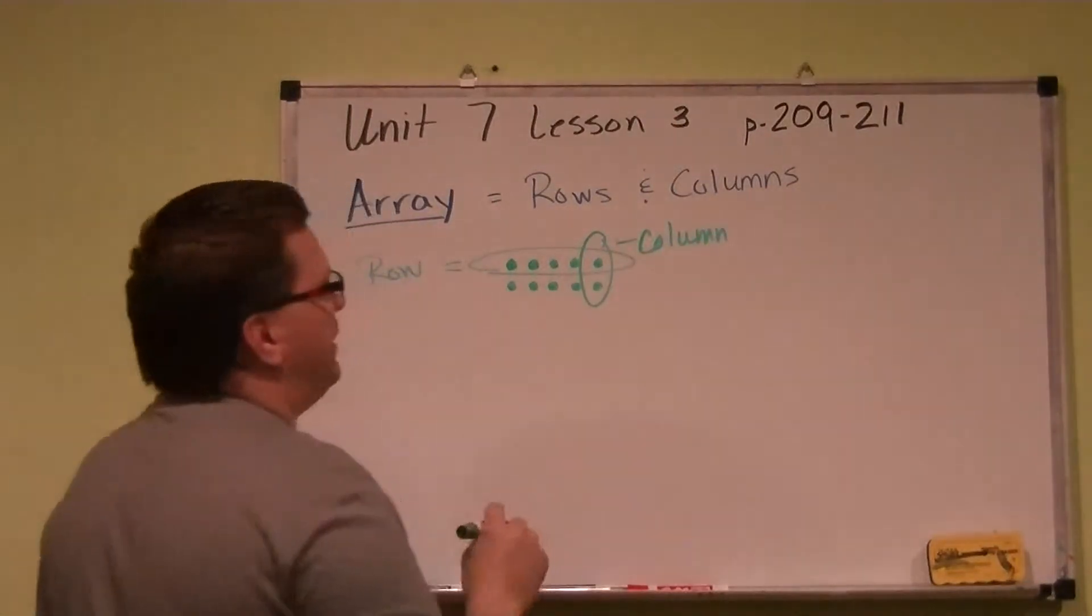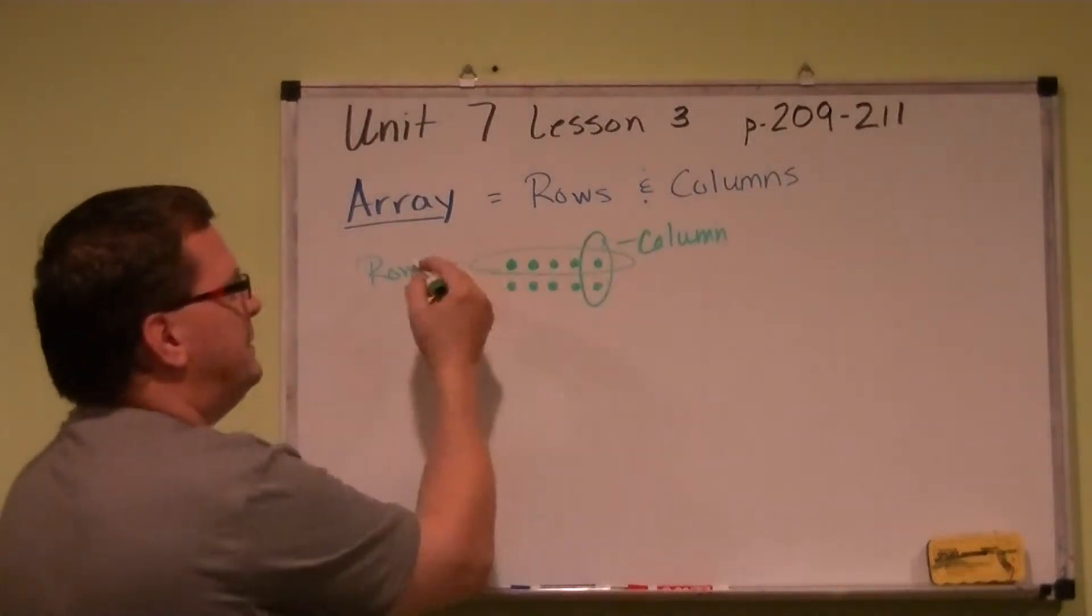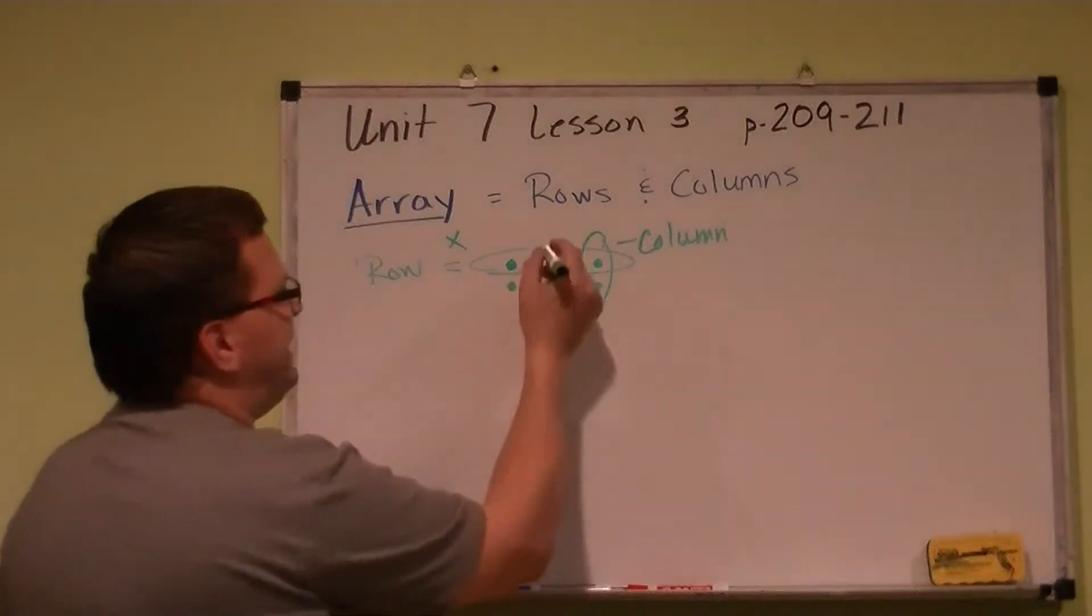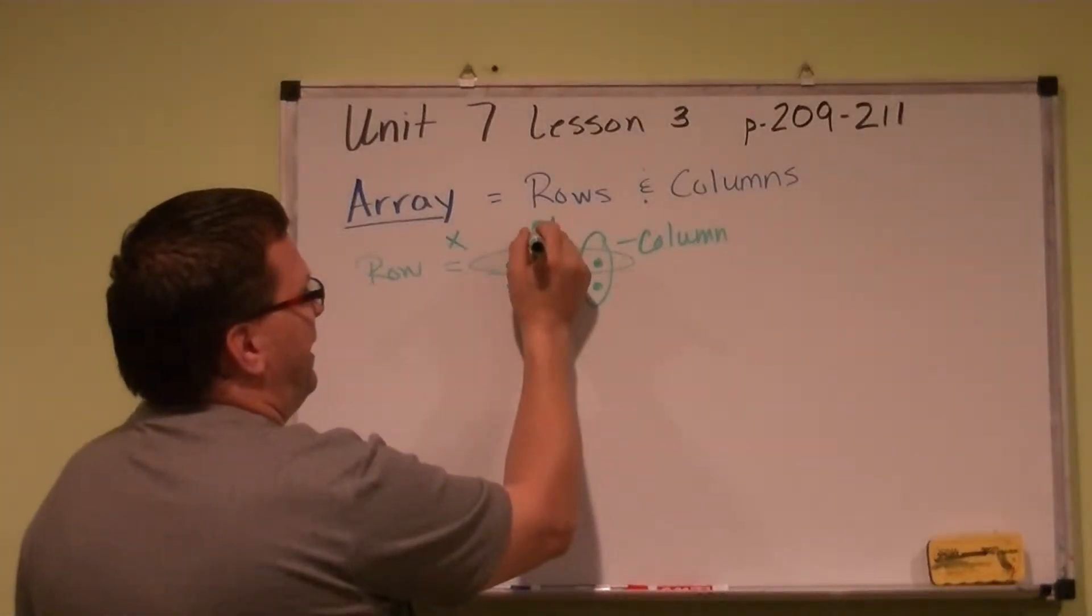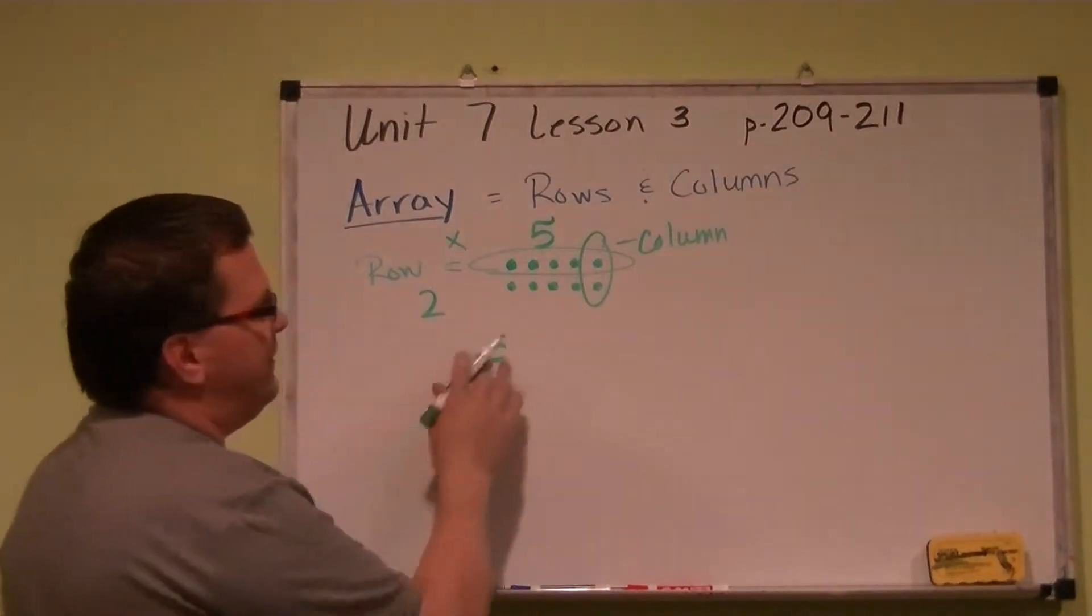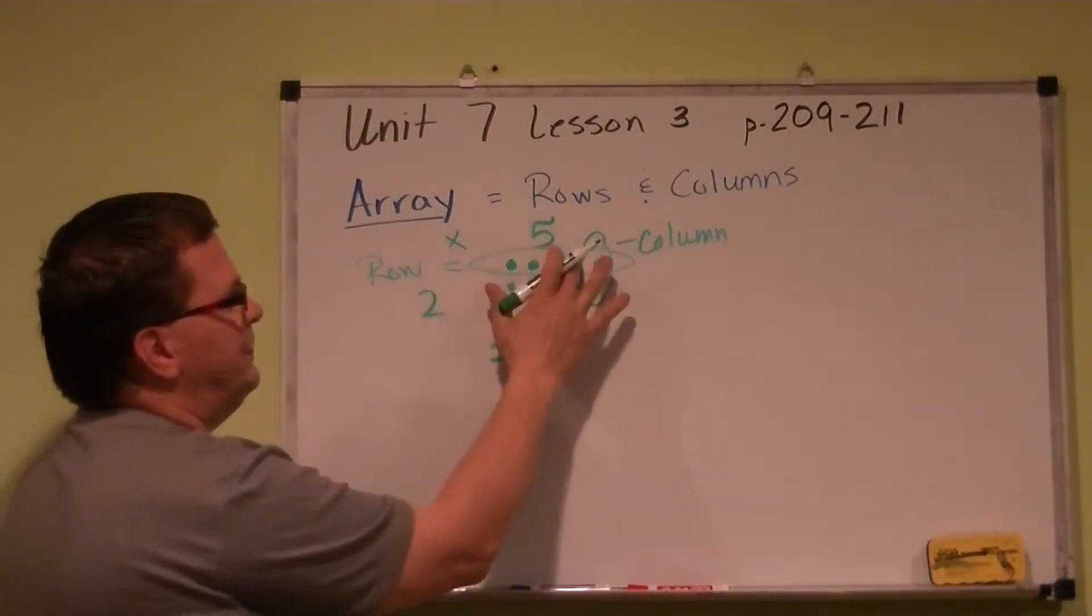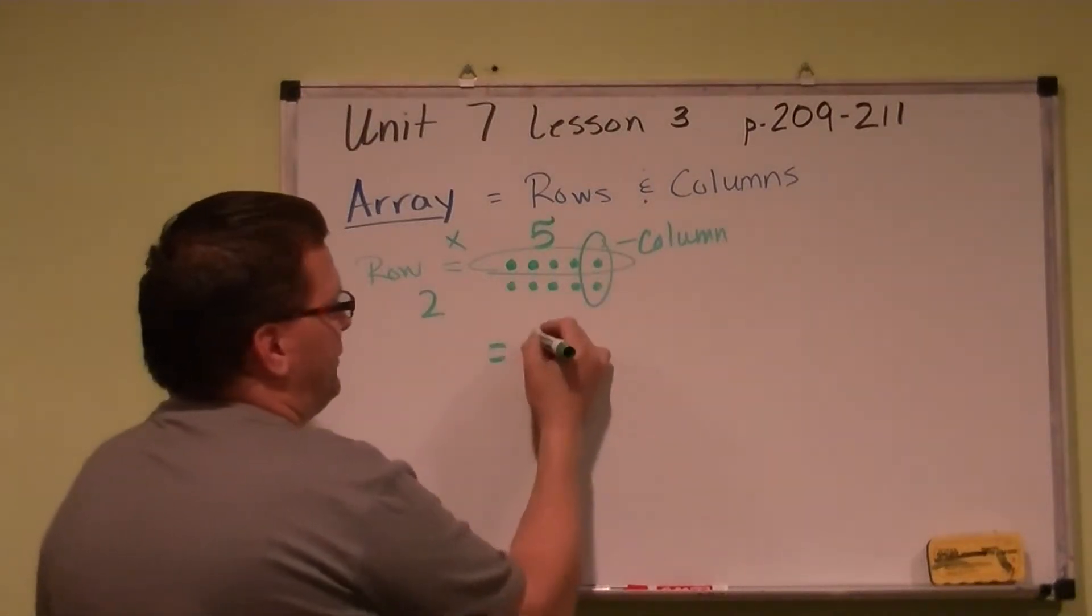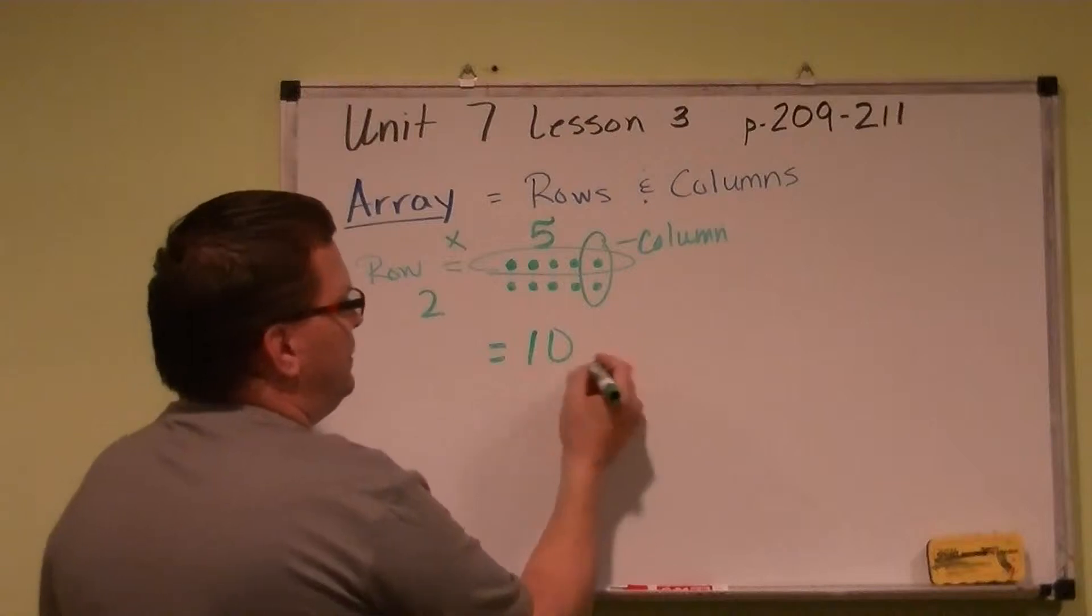And this is what we call the column. Now when we multiply, we say basically a column times row equals whatever. So in this case, it's five columns times two rows. What is that equal? And you can count them all up. One, two, three, four, five, six, seven, eight, nine, ten. So five times two would equal ten.